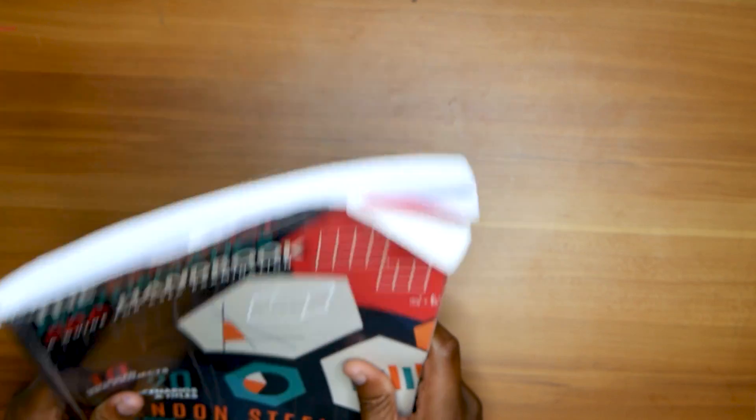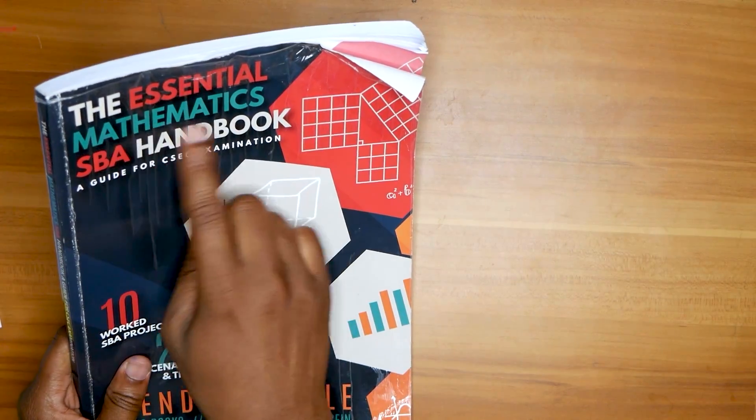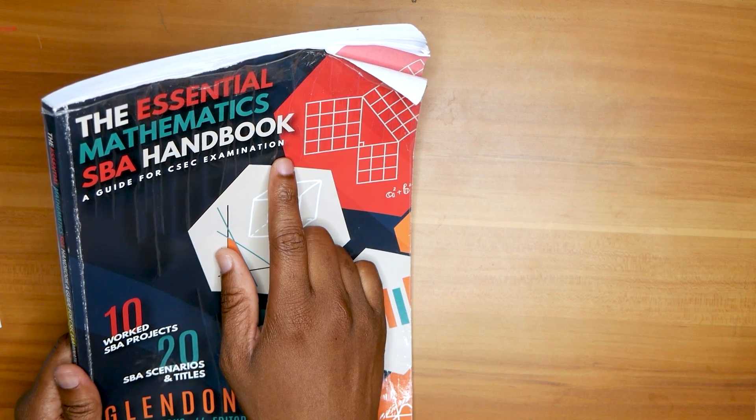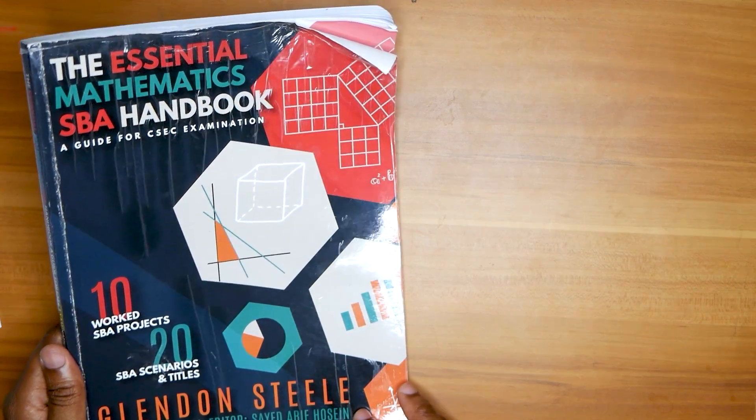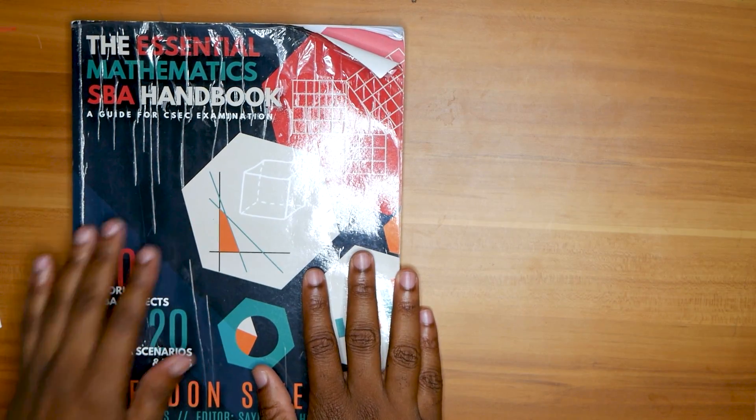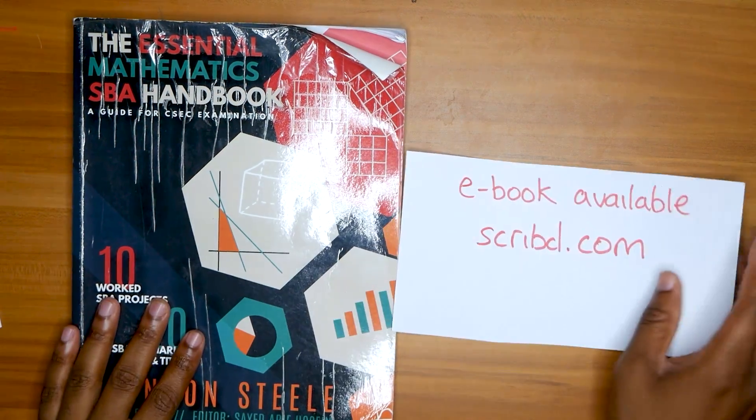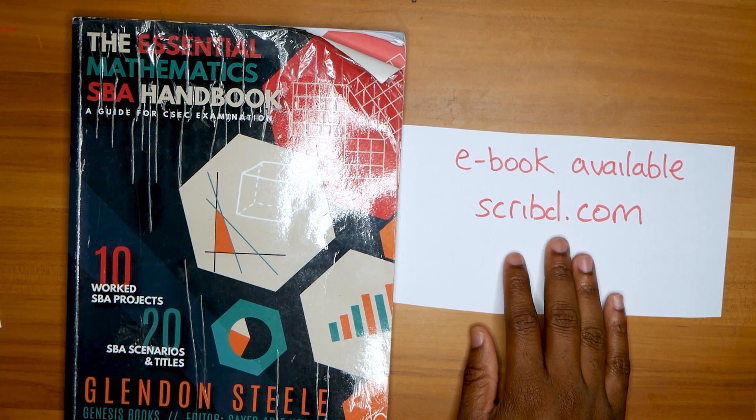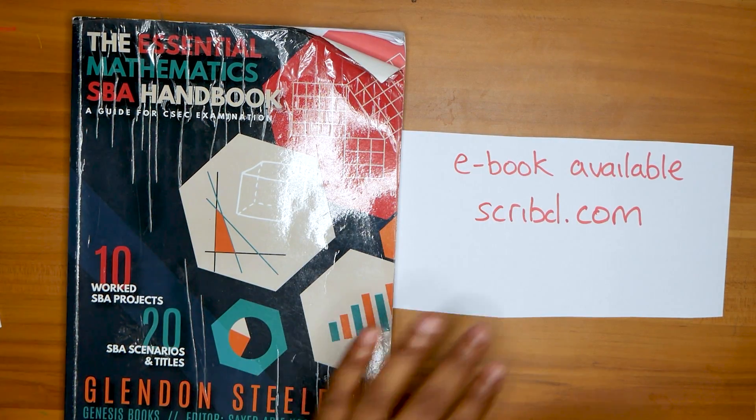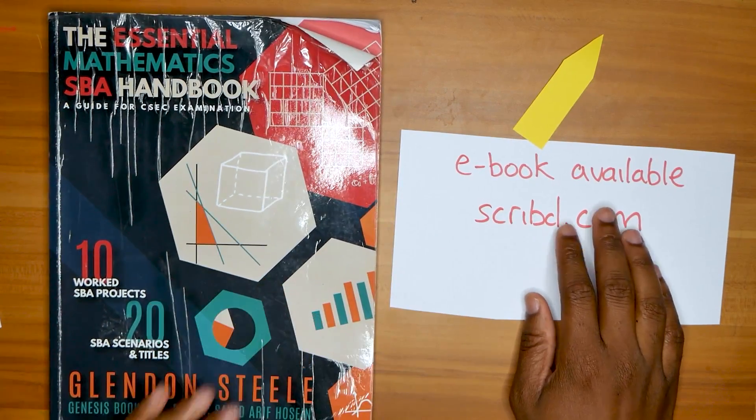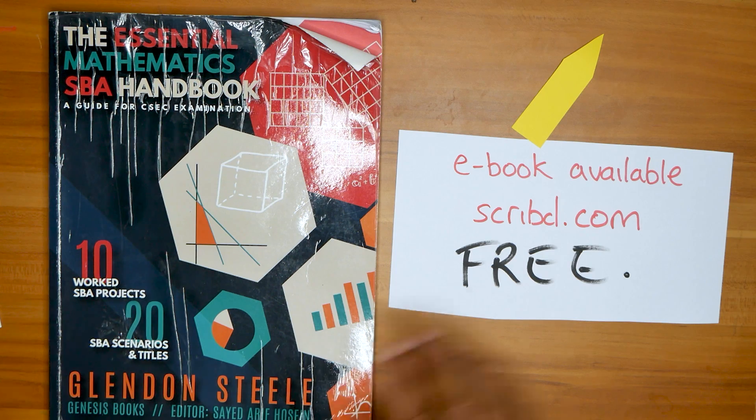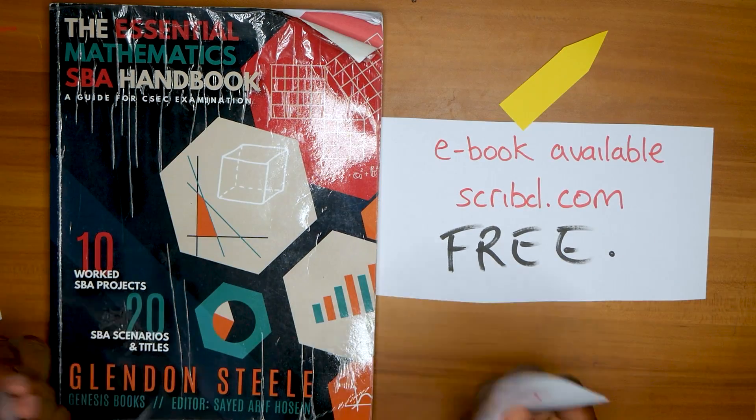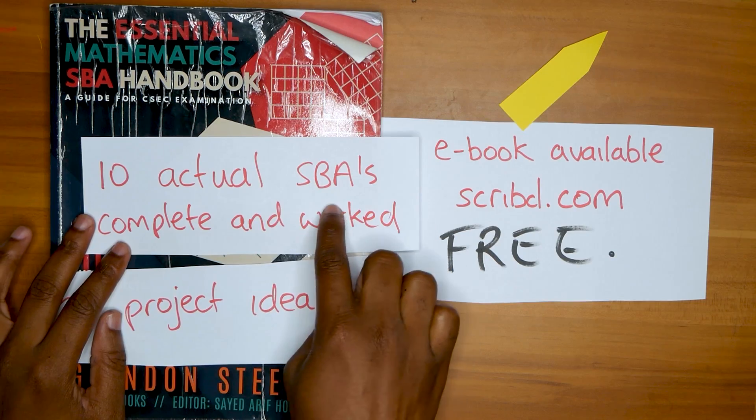The best SBA book I found was 'The Essential Mathematics SBA Handbook: A Guide for CSEC Examination,' with 10 actual worked SBAs and 20 scenarios and titles. I think this is the best one you can get. If you don't want to buy it, you can also check out the e-book available on Scribd.com—I saw it free. I don't know how long it'll be free for, so you can run along and see if you can snag that.